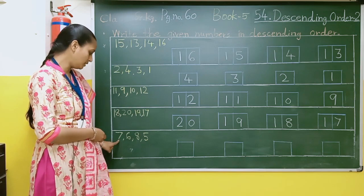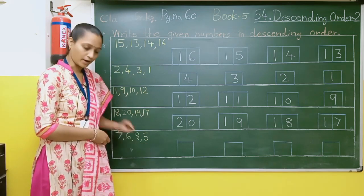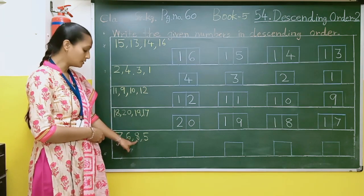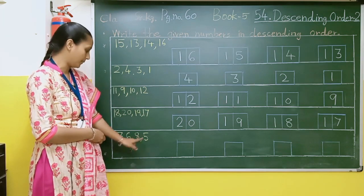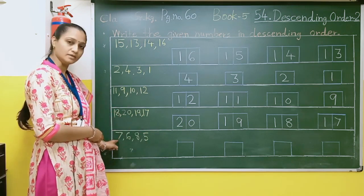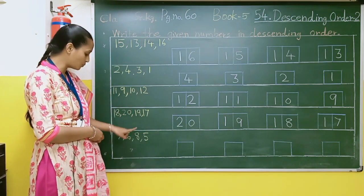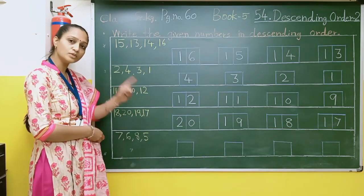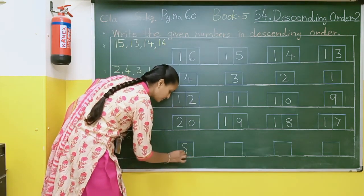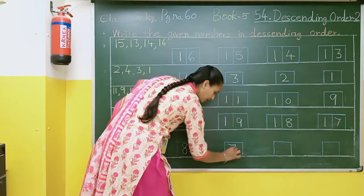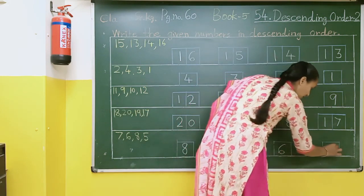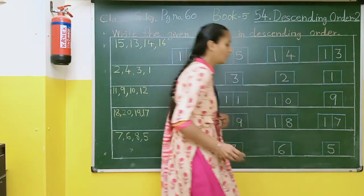Now here the given numbers are 7, 6, 8, 5. So which is the biggest number? 8. Here we will write 8, then 1 digit smaller is 7. So we will write 8, then 7, then 6, then we will write 5. Okay students?